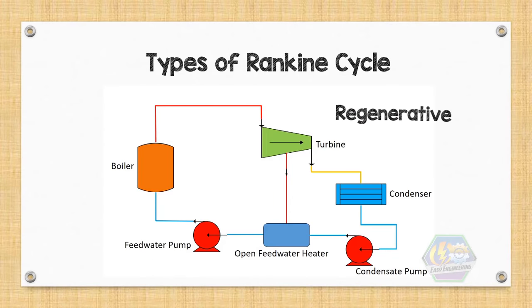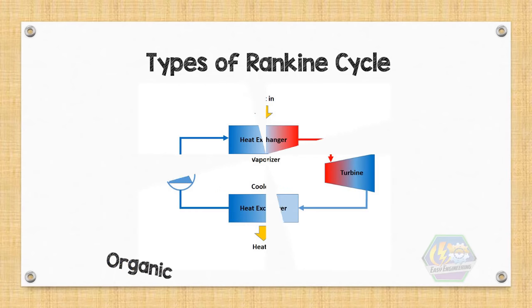We also have a regenerative Rankine cycle. We bleed apart the steam into heat exchangers to preheat the feed water before entering the boiler. There is also an organic Rankine cycle. It uses an organic high molecular mass fluid with a boiling point occurring at lower temperature than the water steam phase change.